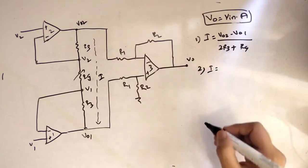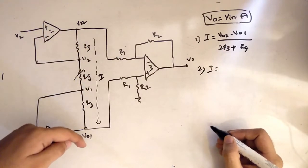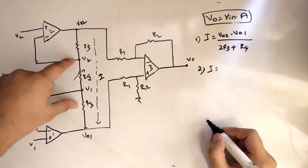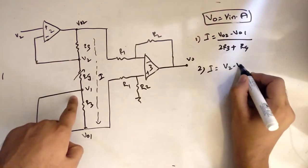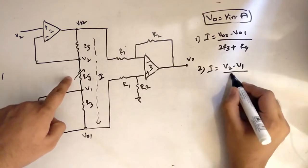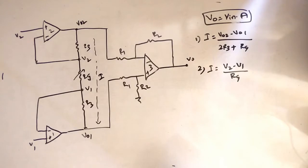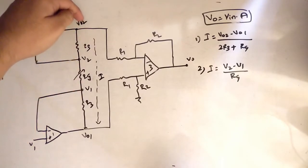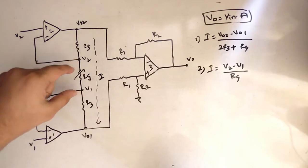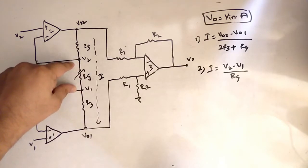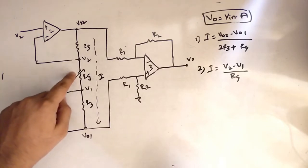Now we apply KCL again, but here for the current I flowing through RG. I would be equal to V2 minus V1 divided by the variable resistance RG. So the voltages here are V2 and V1 and the resistance here is RG.